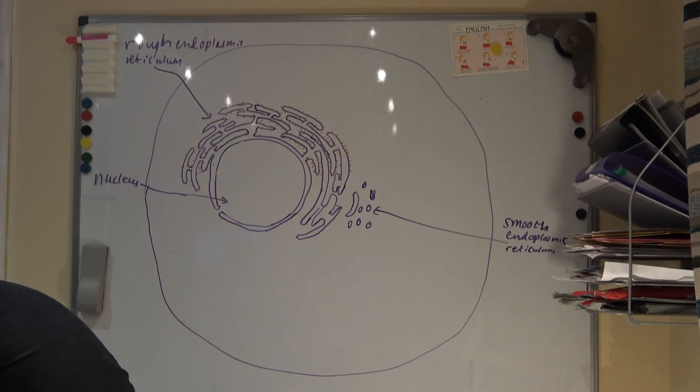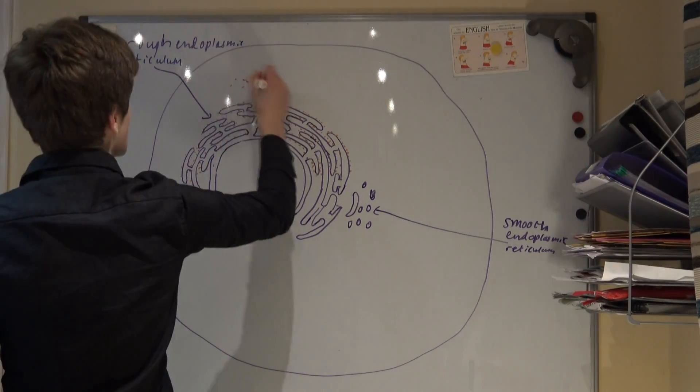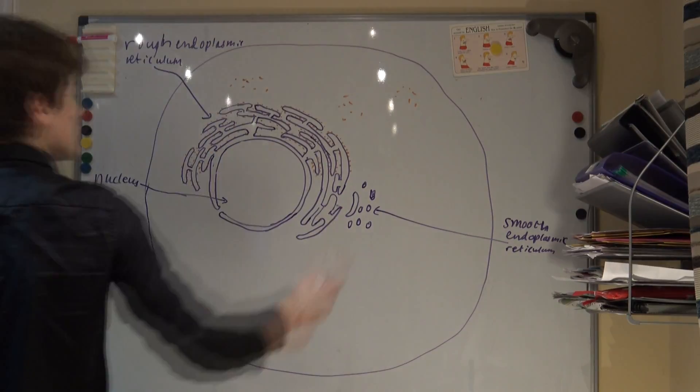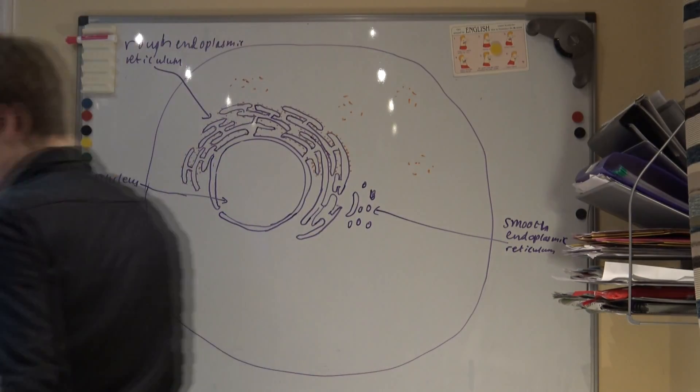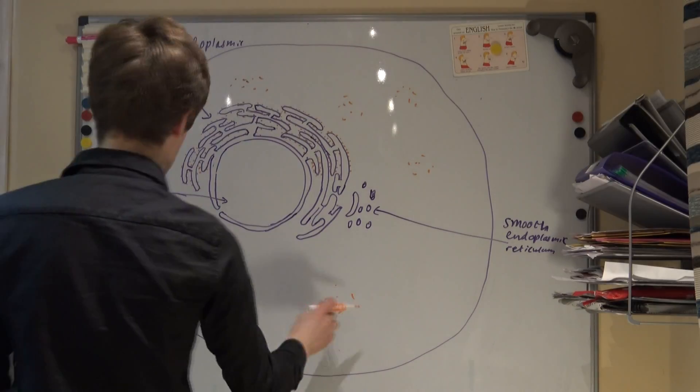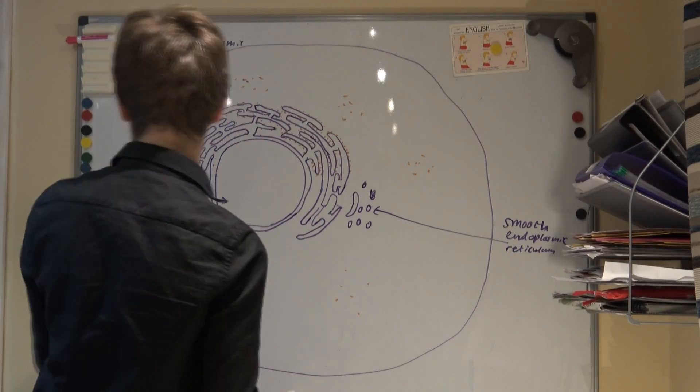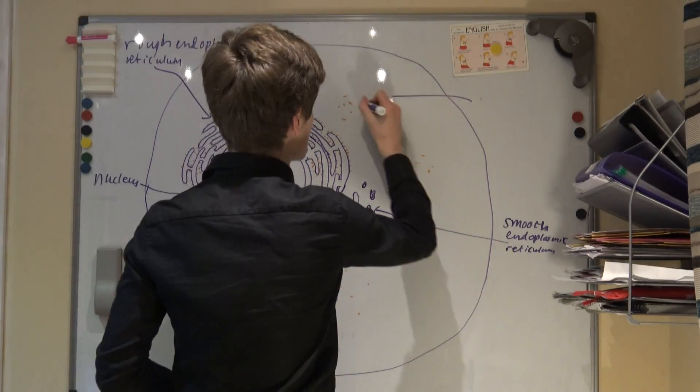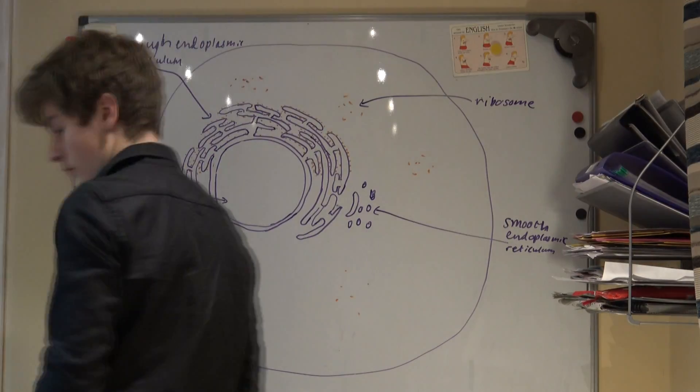Ribosomes themselves are organelles created in the nucleolus in the nucleus. They can be free floating in the cytoplasm as well as attached to the rough endoplasmic reticulum. They are the site of protein synthesis so can also be found in mitochondria, chloroplasts and even prokaryotic cells.